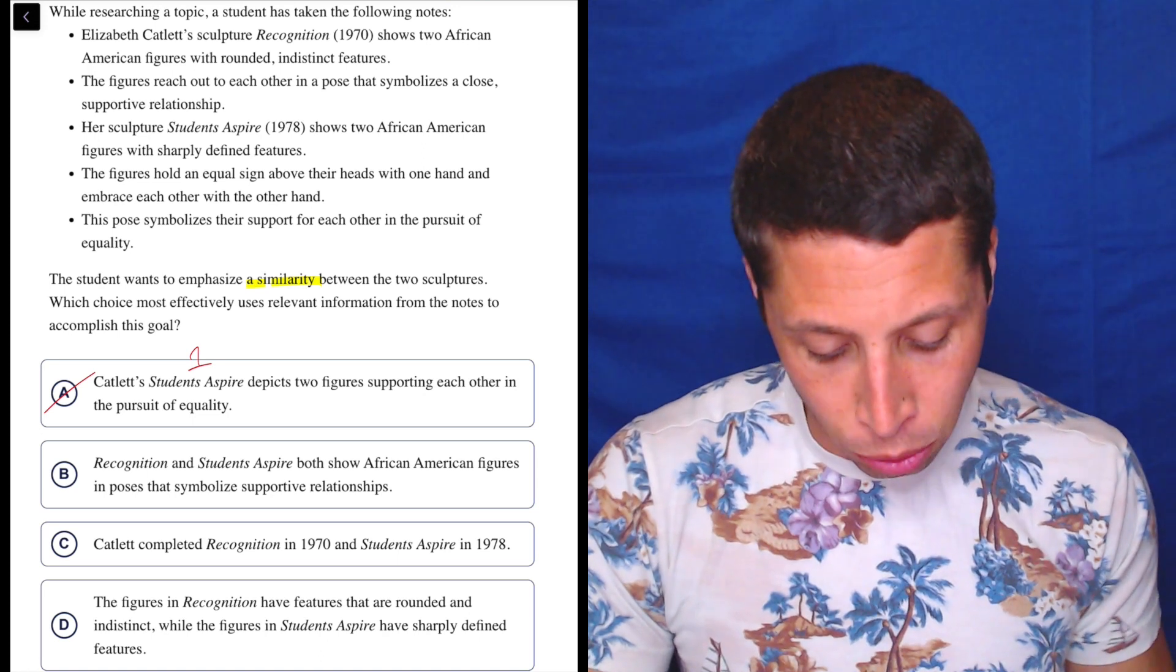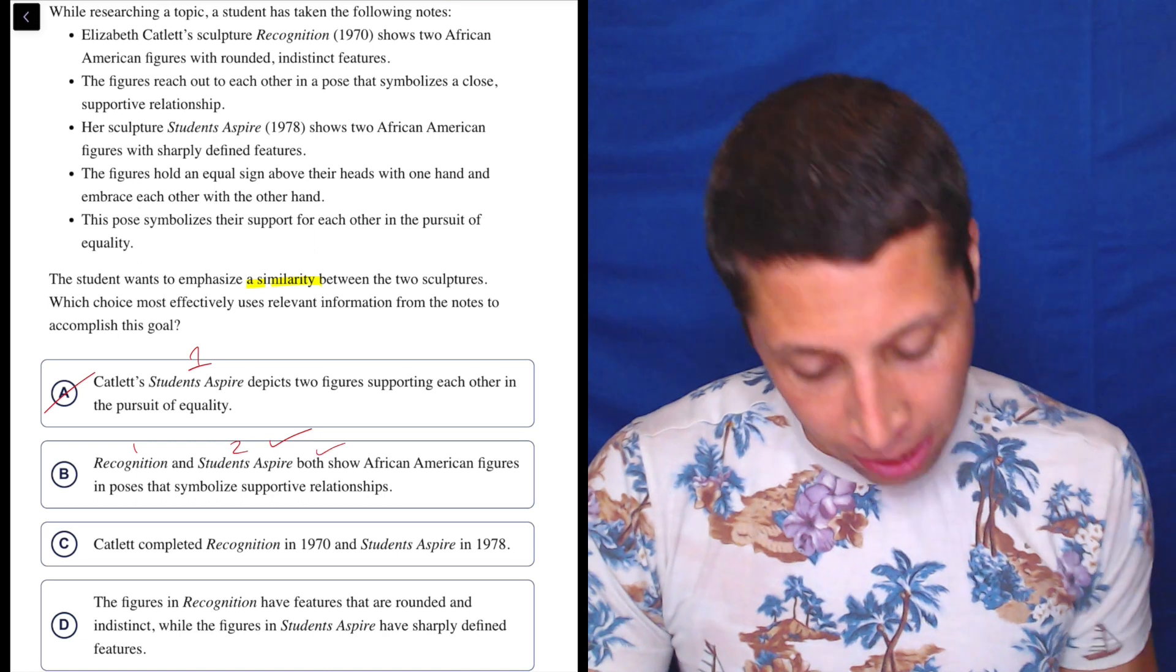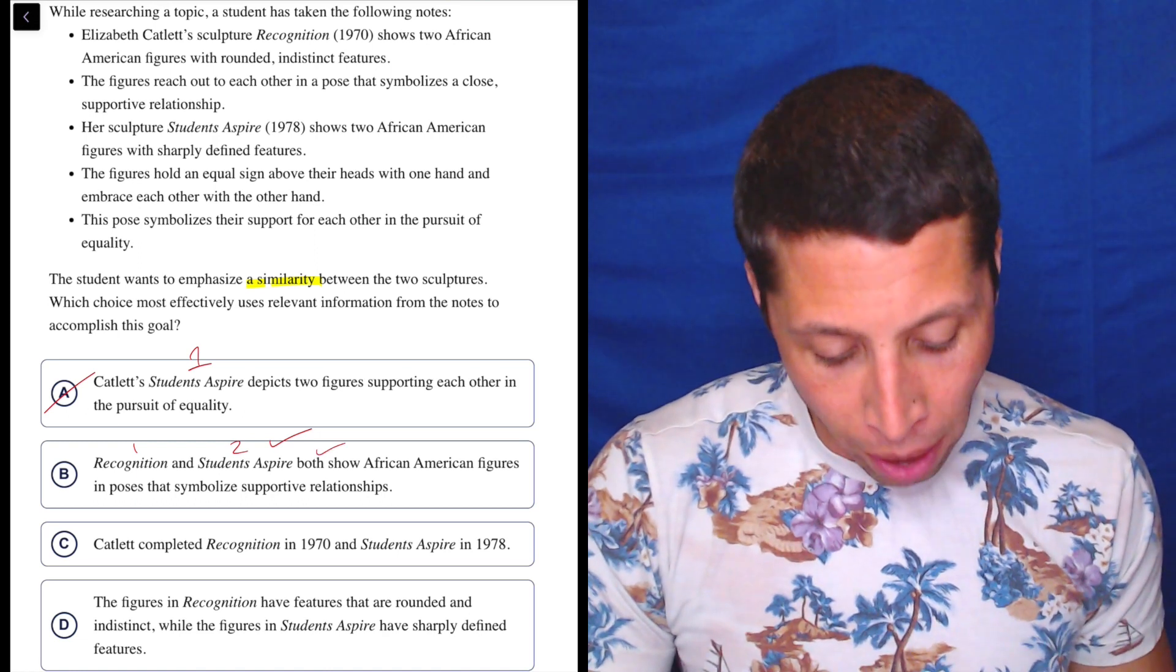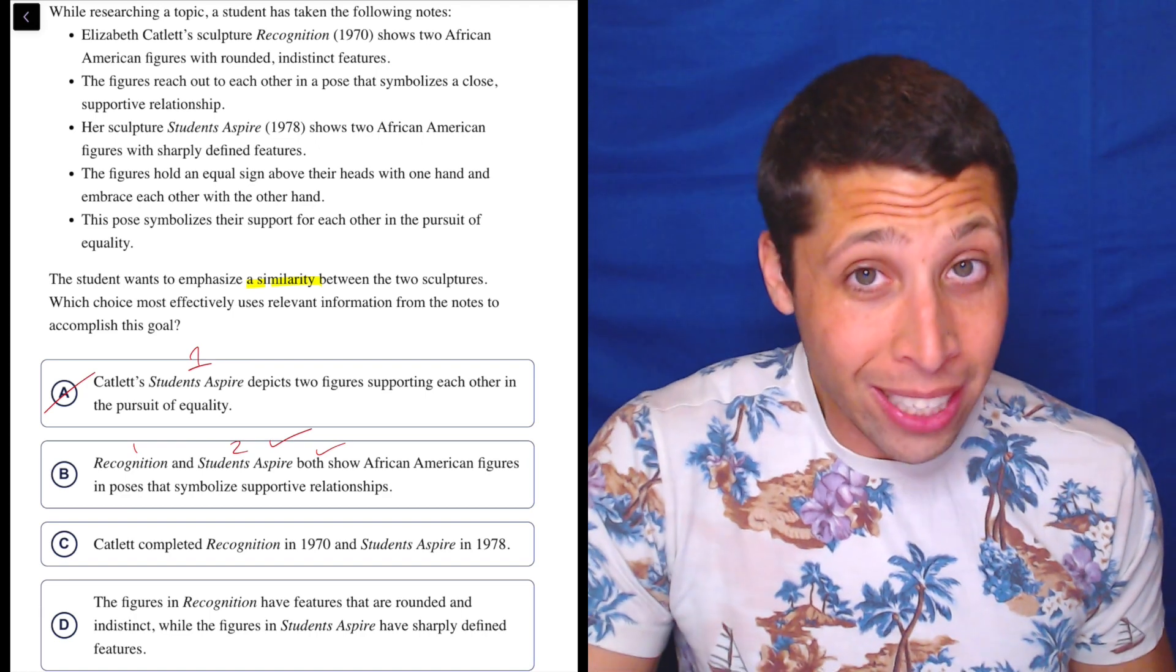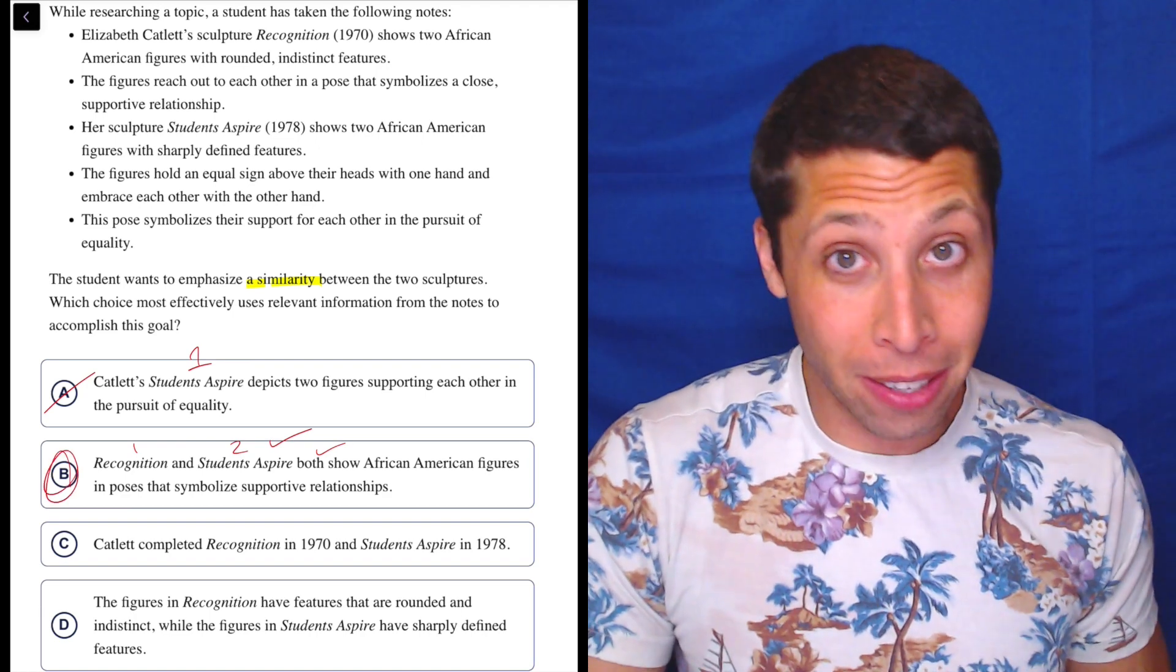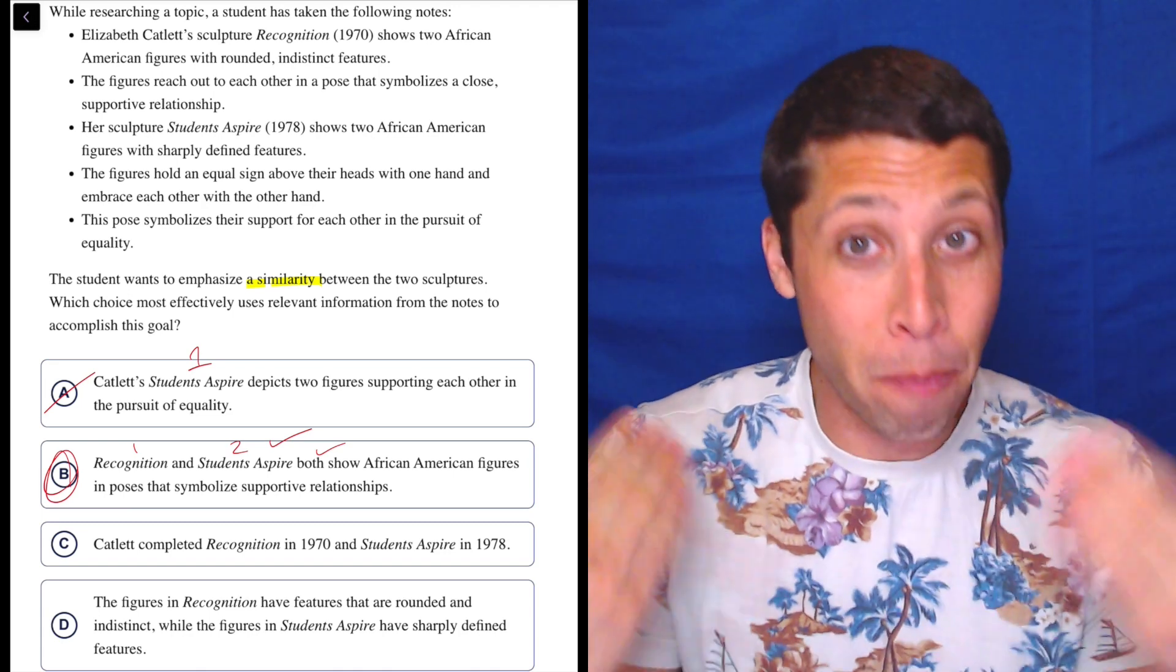B: Recognition and Students Aspire—one, two, so good. Both—sounds like we're comparing—show African-American figures in poses that symbolize supportive relationships. It's definitely this. Now, I gotta read everything else, but it's definitely this. It has two sculptures and it says that there's a similarity between them, right? They both have some feature.